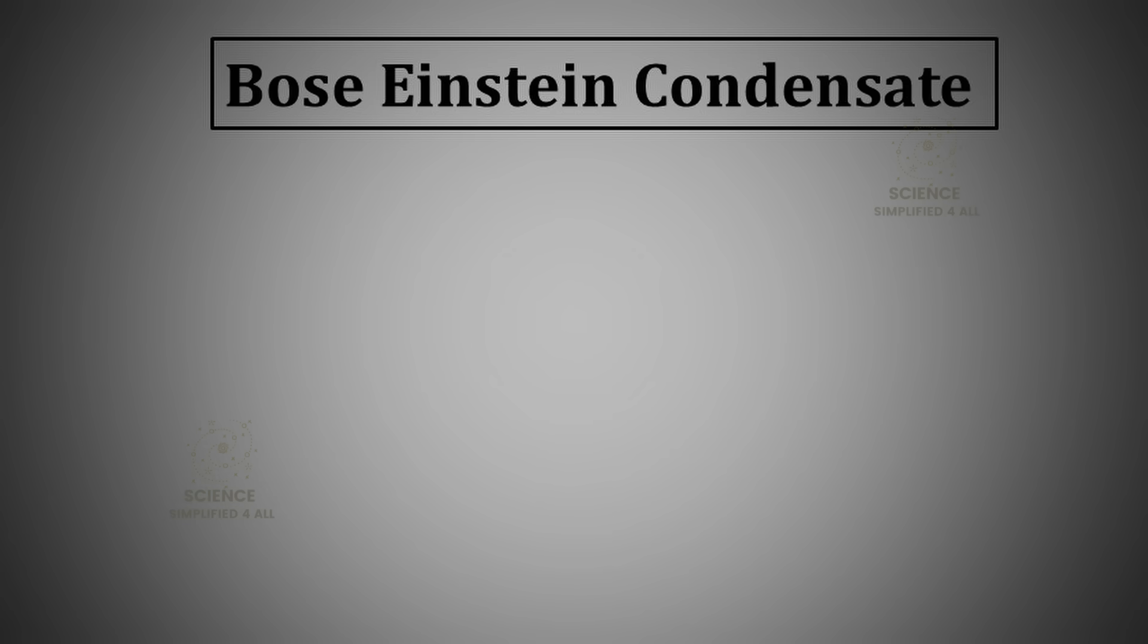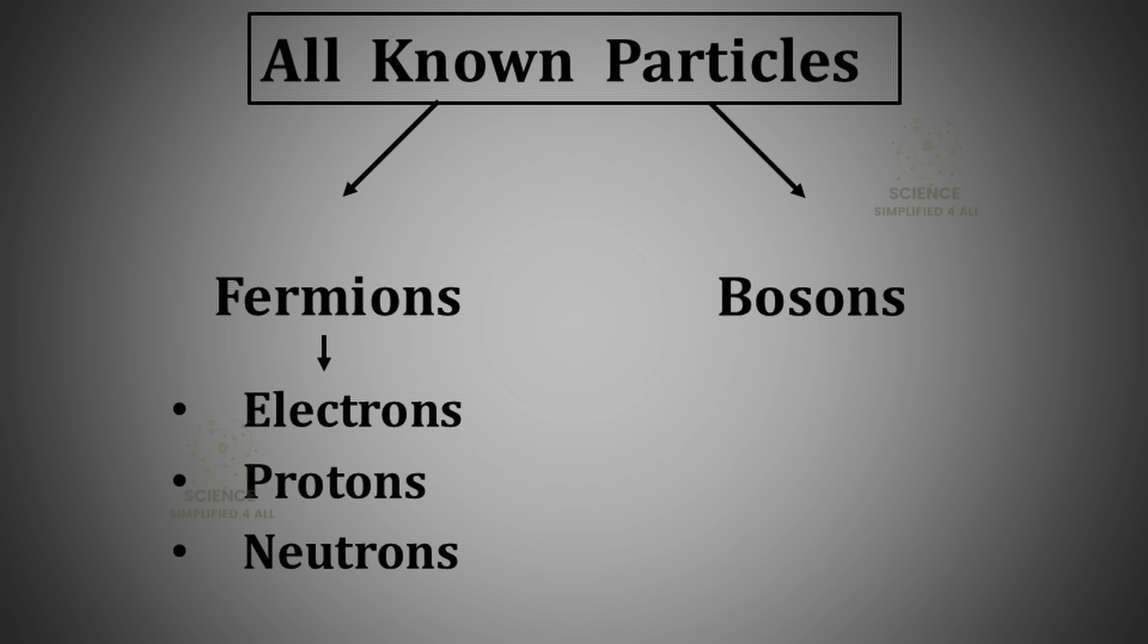Next, let us understand Bose-Einstein condensate. All the particles in our universe can broadly be classified into two main categories, fermions and bosons.